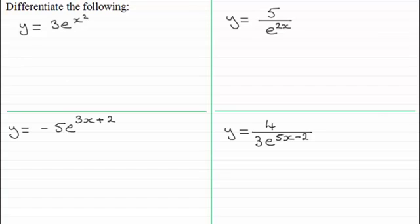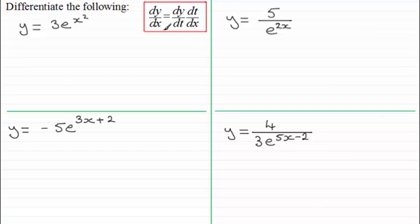Hi there. In this video I want to extend the chain rule, which you should already be familiar with: dy by dx equals dy by dt times dt by dx, where t is some function of x. If you're unsure of this, do go back and check out my first tutorial in this series.